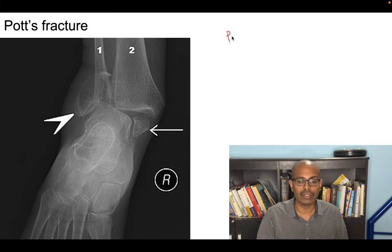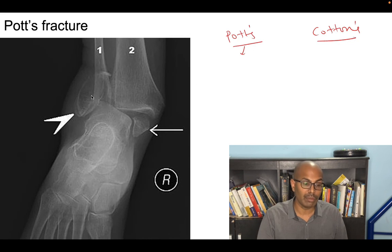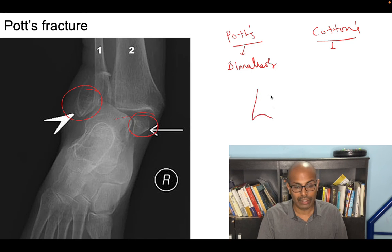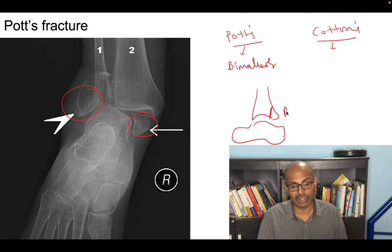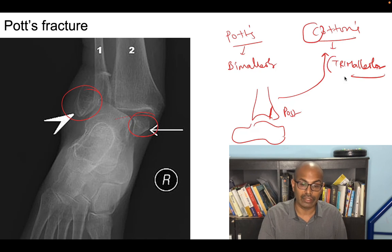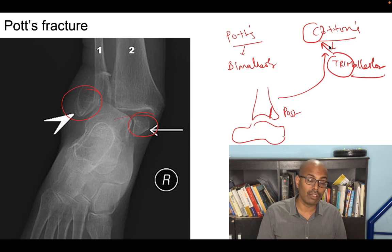For the ankle, there are two important entities: Pott's fracture and Cotton's fracture. Pott's fracture is a bimalleolar fracture — distal fibula fracture plus medial malleolus fracture. Cotton's fracture (trimalleolar) adds a posterior malleolus fracture to the two. A mnemonic: C is the third letter of the alphabet and T is tri — so Cotton's = trimalleolar fracture. Pott's spine is spinal tuberculosis; Pott's fracture is bimalleolar; Cotton's fracture is trimalleolar.